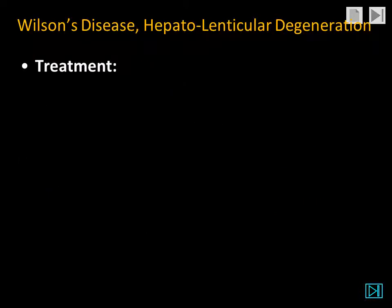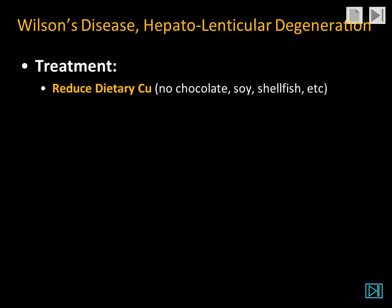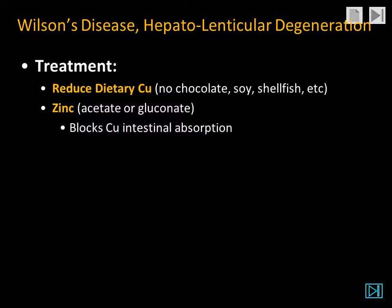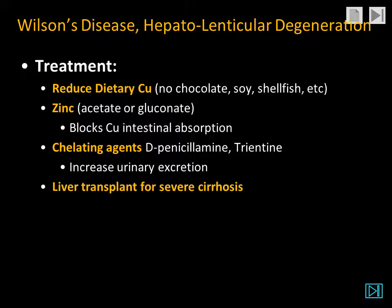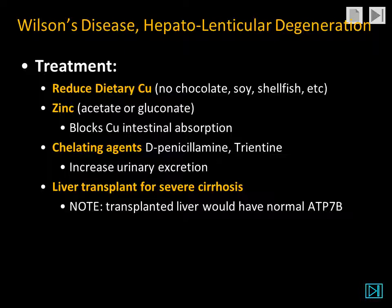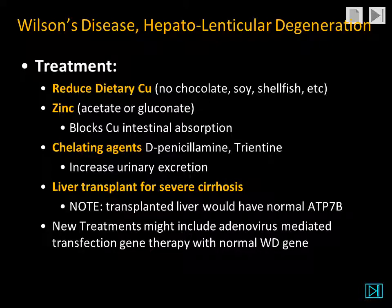The treatment of hepatolenticular degeneration or Wilson's disease begins with reducing dietary copper. Patients can be given a zinc supplement which will block copper absorption from the intestine. Chelating agents are now a second line of treatment with D-penicillamine or trientine, which increase urinary excretion. If there is severe cirrhosis, liver transplantation is indicated. The transplanted liver should have a normal ATP7b and therefore normal metabolism and biliary excretion of copper. New treatments might also involve gene therapy to replace the defective gene within the hepatocytes.